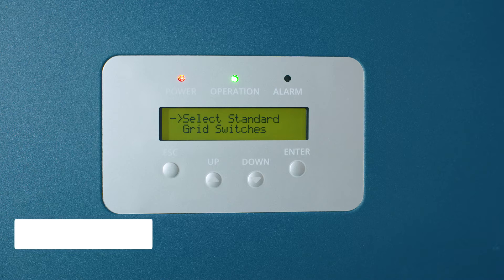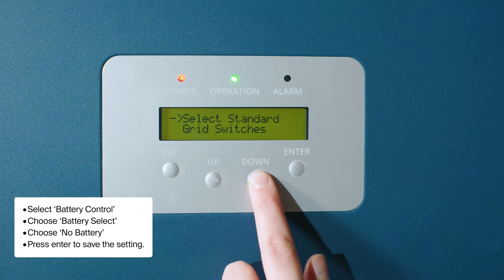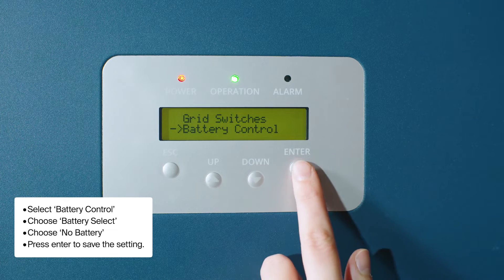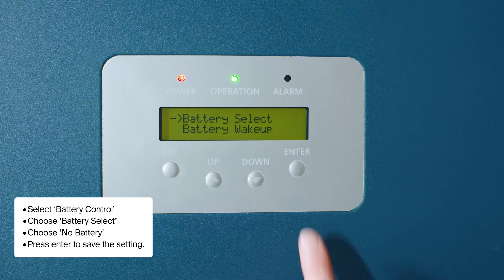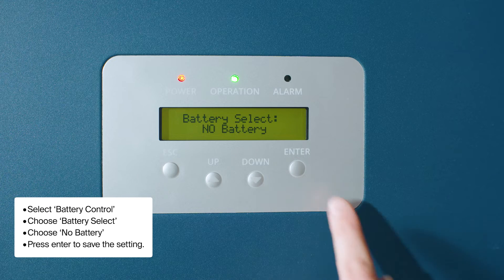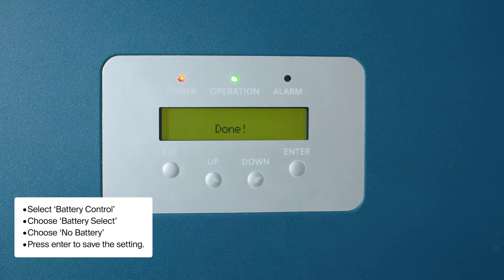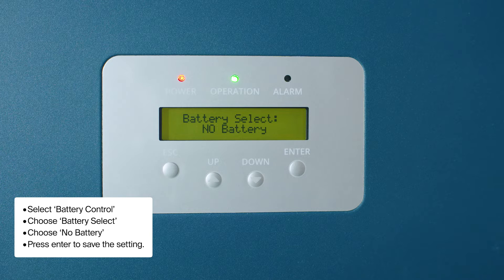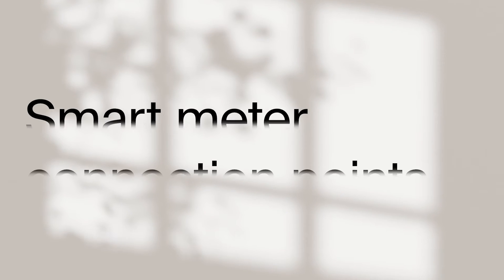Ensure the battery setting is correct. When you haven't installed a battery, select Battery Control, choose Battery Select, choose No Battery. If a battery is installed, choose the correct brand from the list and press Enter to save the setting.